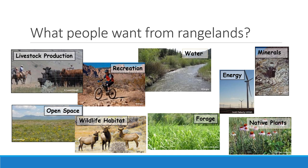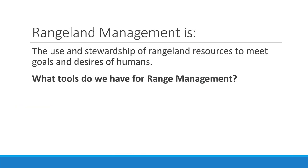Open space is a growing resource for rangelands, especially as we become more urbanized and its value increases. Wildlife habitat has always been important and is at the core of much of what we do on rangelands. Forage is another important resource for both livestock and wildlife. Native plants — their values for medicines and human uses were recognized by native tribes and pioneers — and we're kind of rediscovering some of those ideas.